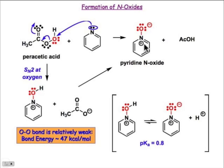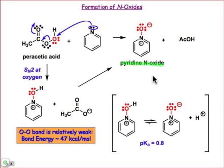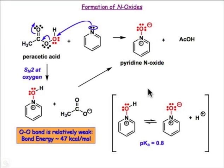Notice that it's zwitterionic — that means it has both positive and negative charges. There's no way to draw that structure without any formal charge whatsoever. We're going to see later on that these pyridine N-oxides are going to be important for other reactions that pyridine gets involved in. The pKa of that group explains why under the reaction conditions that proton is lost — it's a fairly acidic hydrogen atom.